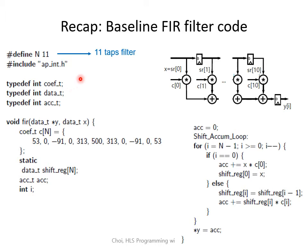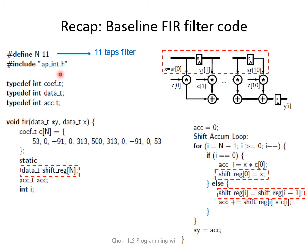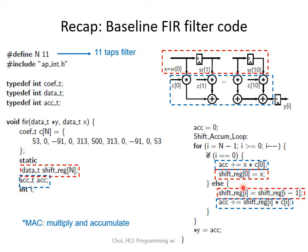We're computing an 11-taps filter. If we want to make a series of registers passing down the data, we can make a for loop and have each iteration copy data from the shift register array. For the multiplication and addition, we can insert that into the same for loop, having each iteration perform multiplication between the shift register and C and add them into variable ACC. This multiplication and addition is called a MAC operation. The final cumulative value is written to the Y output and the function ends.